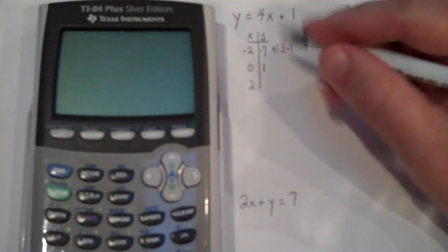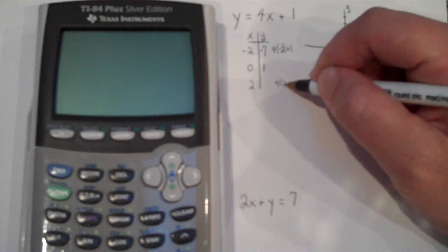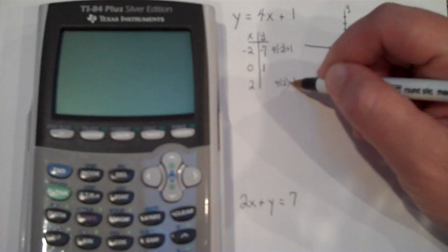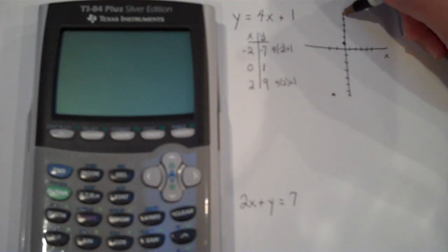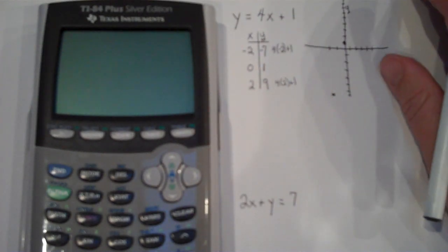If my input is 2, my output is 4 times 2 plus 1. That's 8 plus 1 or 9. So I can graph here. There's 2. I'm going to need some more on my vertical. 1, 2, 3, 4, 5, 6, 7, 8, 9. That's really at the top of the page.